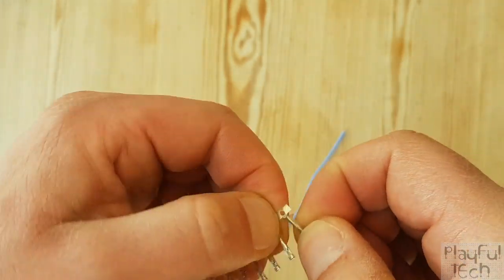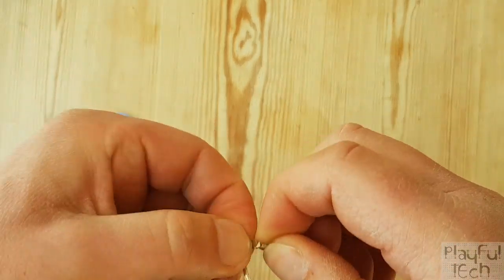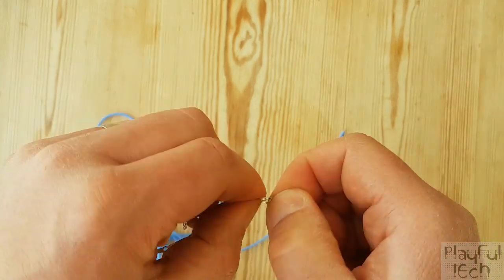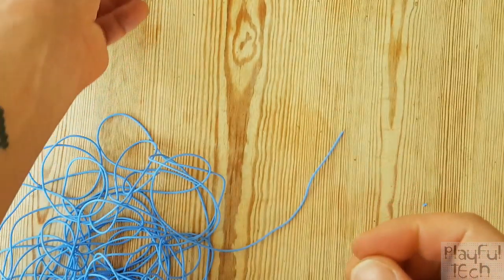The process of crimping is basically the same whether you use a male or a female connector, so this part of the process will be exactly the same. I can't actually get this one to come off. Let me give that a twist. There we go.